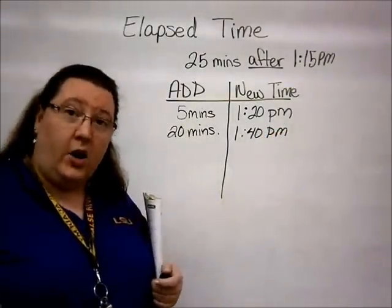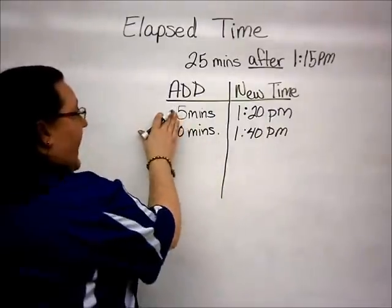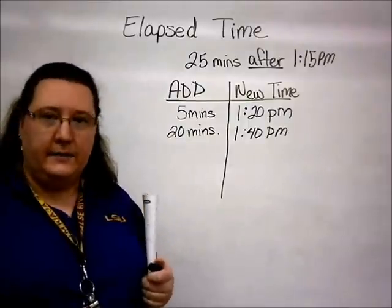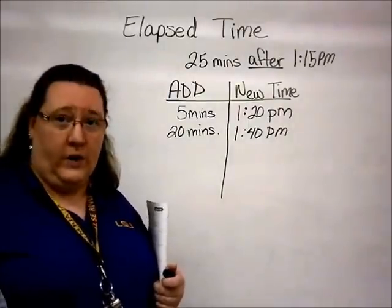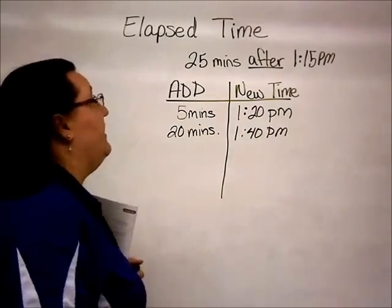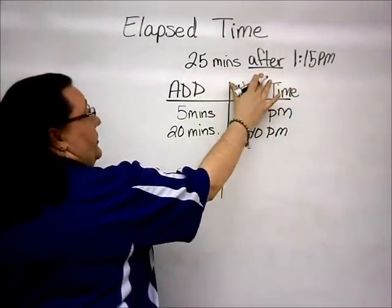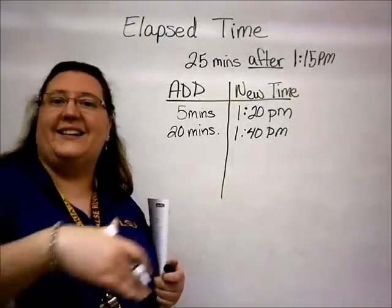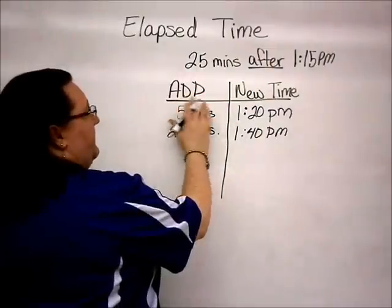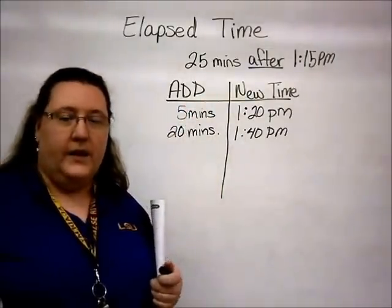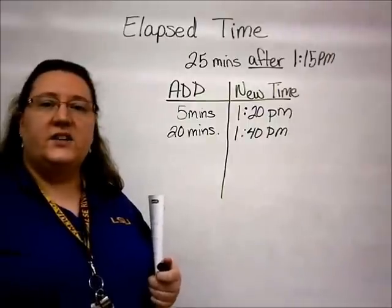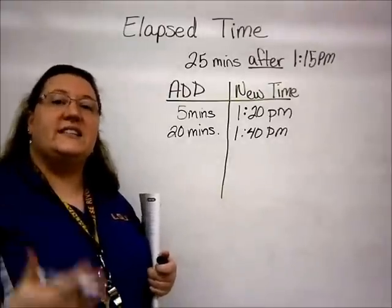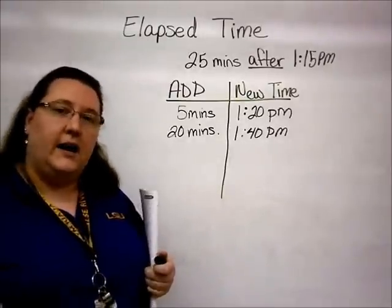If that's difficult, students can continue adding in 5-minute or 10-minute increments — whatever is easiest for them. You can also do the same thing if instead of 'after,' it was 'before' that time. Instead of adding, they would subtract the time and change the column name to 'subtract' instead of 'add.' So when using elapsed time, the easiest thing to do is put the information in a T-chart so students can see the time being added or taken away.